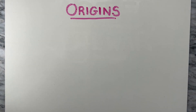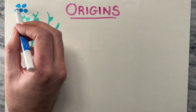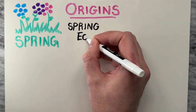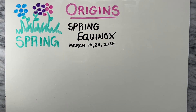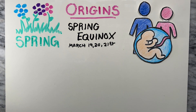The origins of Easter can be traced back to ancient pagan rituals that celebrated the arrival of spring. The spring equinox marks the beginning of the season of fertility and growth, which was celebrated by many cultures.